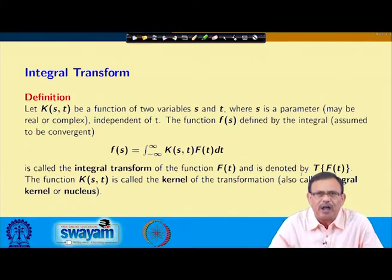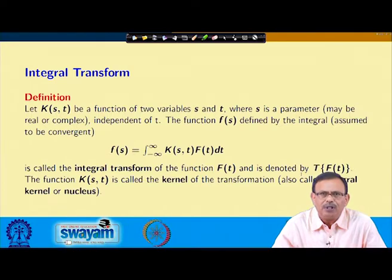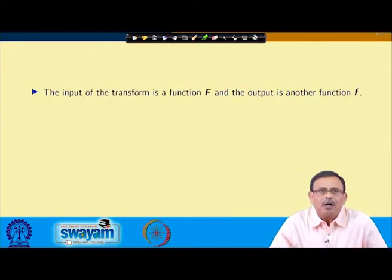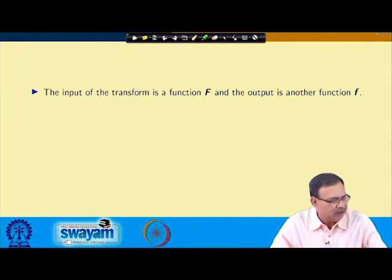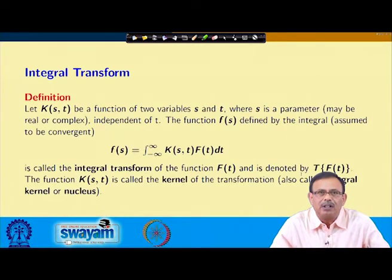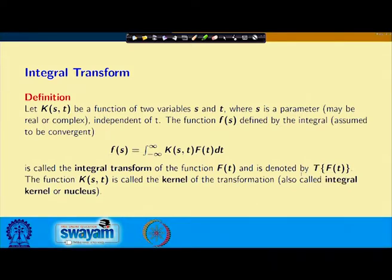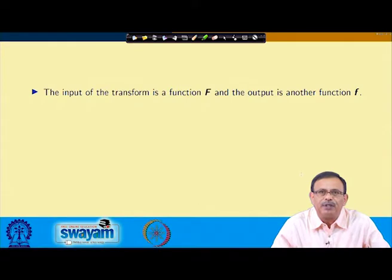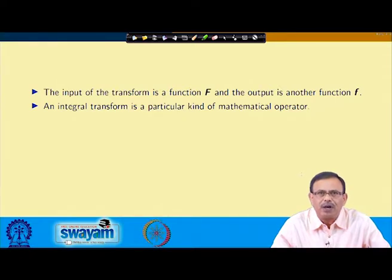By changing the value of k(s,t), we can find various types of transforms such as the Laplace transform, Fourier transform, and so on. The input of a transform is a function — here capital F(t) is the input and small f is the output. An integral transform is a particular type of mathematical operator.